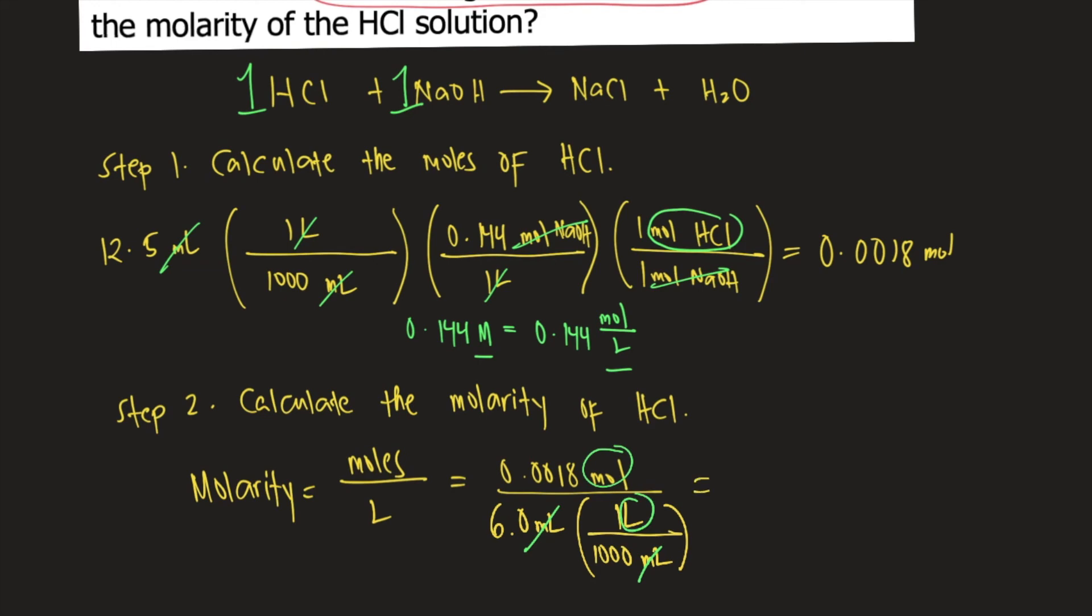And if you solve the molarity, 0.0018 divided by 6 mL converted to liters, that is equal to 0.300 moles per liter. Or you can write this as 0.300 molar, capital M. And this is the answer to the question.